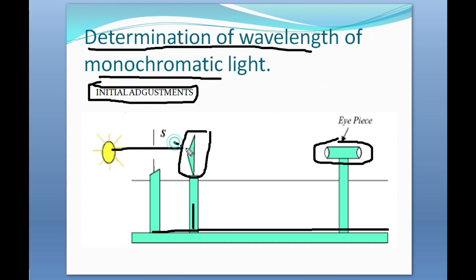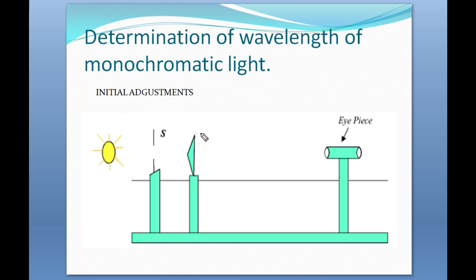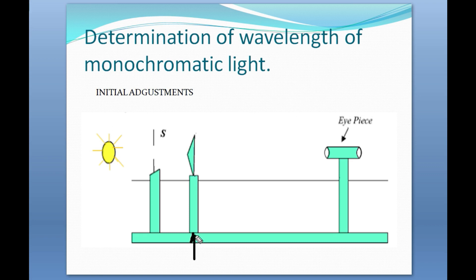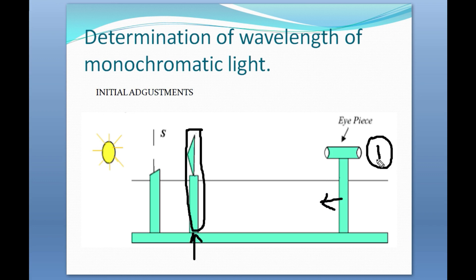When we switch on the sodium vapour lamp, light falls on the prism. We then move the biprism and adjust it until we get two vertical bright slit images. After setting that, we keep the biprism constant and then move the eyepiece until we find the interference pattern.